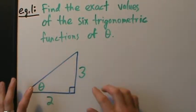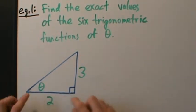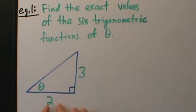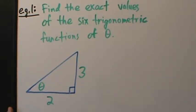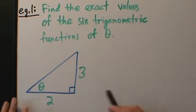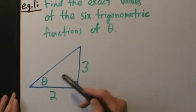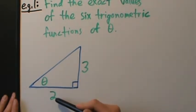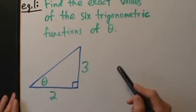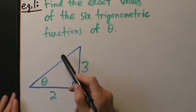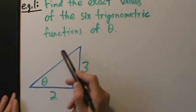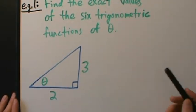We're given this triangle. Here's theta, this side is 2, this side is 3, and it's a right triangle. Before we can do anything, we can find two of the trig functions right away — we know here's theta, here's the opposite side, here's the adjacent side, so we can get tangent and cotangent. But first, let's figure out the hypotenuse so we can find the other four trig functions.